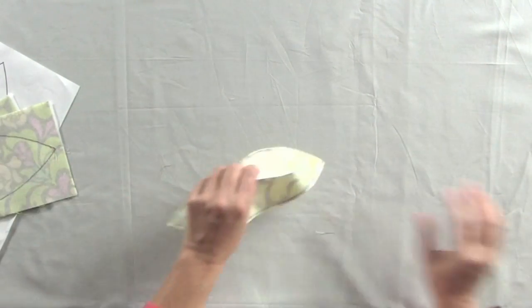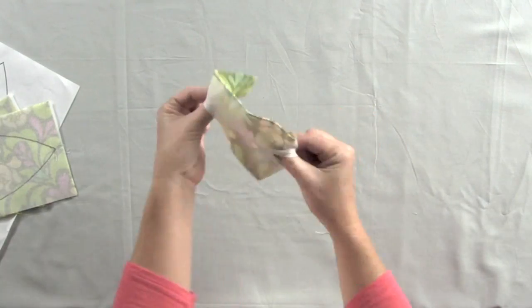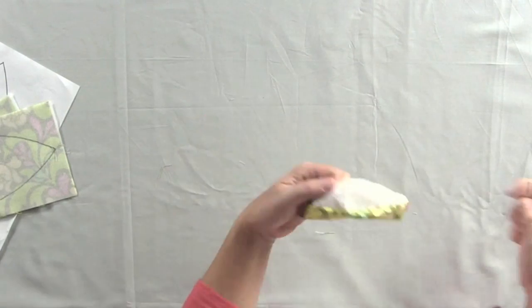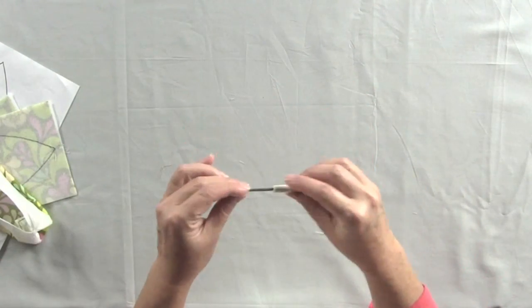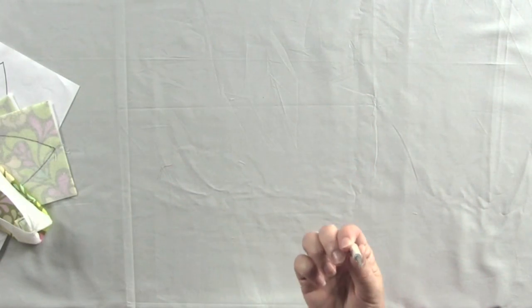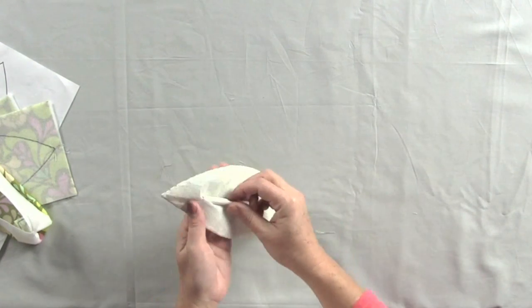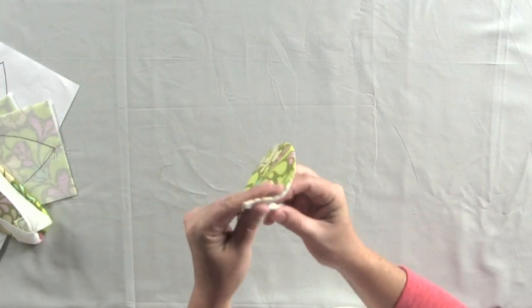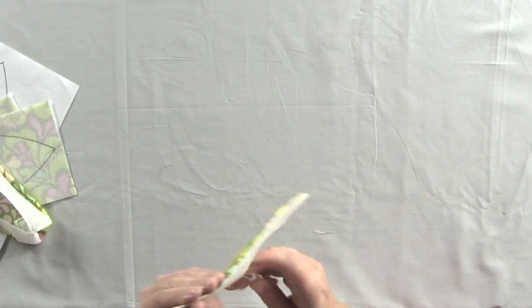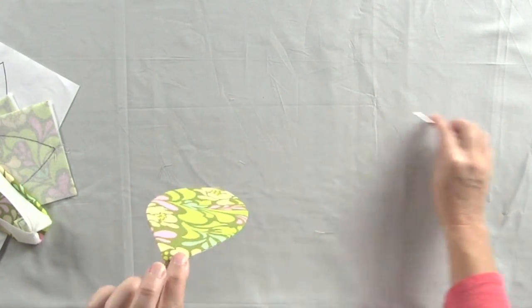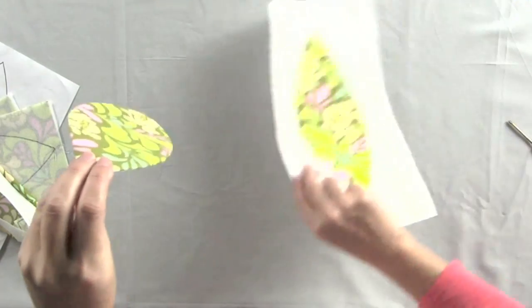Once you have that unit in place, now you can flip this entire unit inside out. And you can use a little, what I like to use is a little Phillips head screwdriver or some other blunt instrument. And you're going to use it to push out the little corners and tips of your applique pieces. And then just finger press the edges around to create your applique piece.